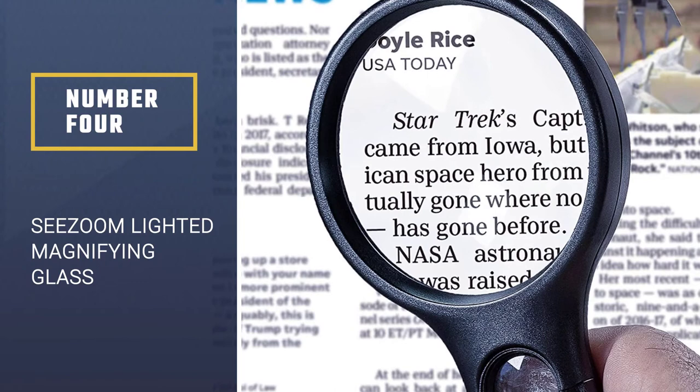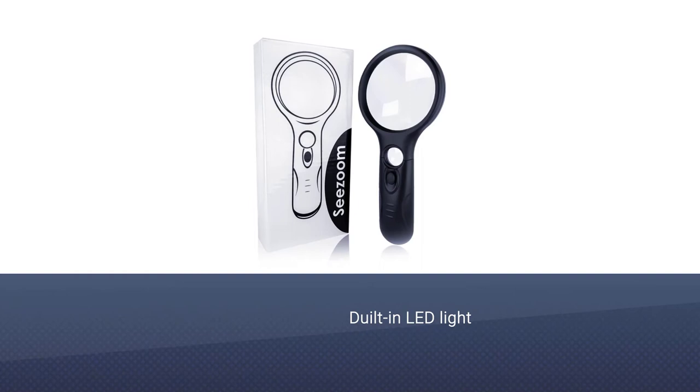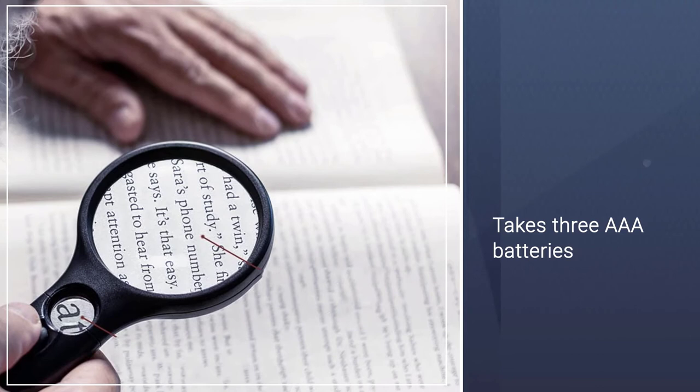Number 4. C-Zoom Lighted Magnifying Glass. If you've ever had difficulty reading the fine print on a menu in a dimly lit restaurant, then you'll appreciate the built-in LED light on the C-Zoom Magnifying Glass.